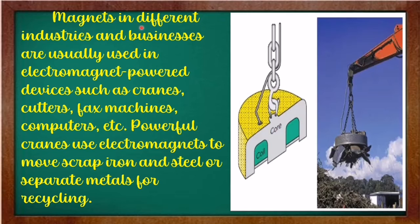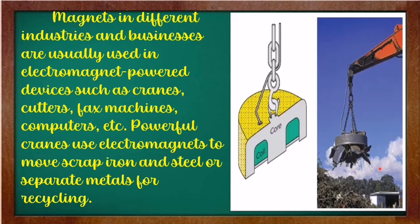Magnets in different industries and businesses are usually used in electromagnet-powered devices such as cranes, cutters, fax machines, computers, etc. Powerful cranes use electromagnets to move scrap iron and steel or separate metals for recycling, just like this in the picture. This is the metal magnet crane that attracts the iron and steel and separates the metals for recycling.